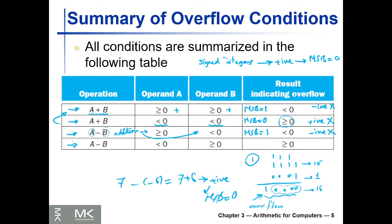For a minus b where a is negative and b is positive — for example, −7 minus 6 equals −13 — the output should be negative so the MSB should be 1. But if you find that the output is positive — meaning the MSB equals 0 — that means there was an overflow.